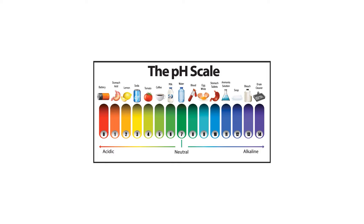Examples on the pH scale include the following: the pH of pure water is 7, the pH of battery acid is approximately 0.8, and the pH of liquid drain cleaner is 14.